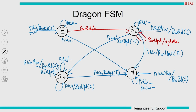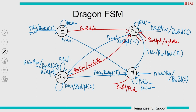In state SM, if a bus update arrives: we update our copy, but now the most recent writer is somebody else, so that cache goes to SM and this cache moves to SC — update local copy and move to SC on a bus update. In state M, if a bus read occurs — a new sharer has entered the system — this cache has the most up-to-date copy, so it gives the data, retains a copy, and goes to SM.